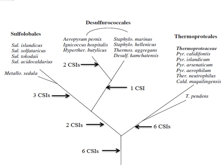Mesophilic crenarchaeotes were recently placed into a new phylum of Archaea called the Thaumarchaeota. However, there are very few molecular markers that can distinguish this group of Archaea from the phylum Crenarchaeota. A detailed phylogenetic study using the CSI approach was conducted to distinguish these phyla in molecular terms. Six CSIs were uniquely found in various Thaumarchaeota, namely Cenarchaeum symbiosum, Nitrosopumilus maritimus and a number of uncultured marine crenarchaeotes. Three CSIs were found that were commonly shared between species belonging to Thaumarchaeota and Crenarchaeota.